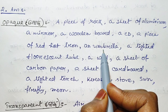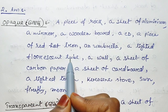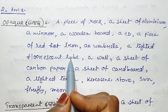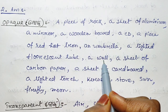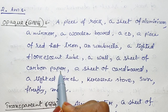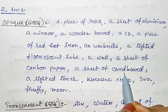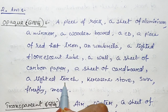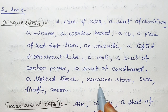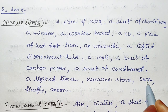Continuing the list: an umbrella, a lighted fluorescent tube, a wall, a sheet of carbon paper, a sheet of cardboard, a lighted torch, and kerosene stove.